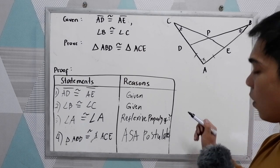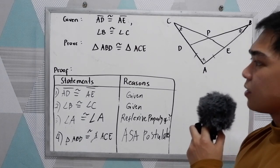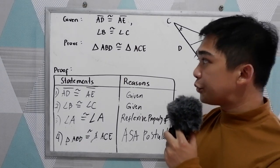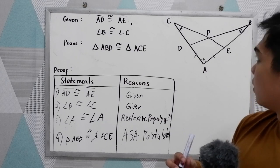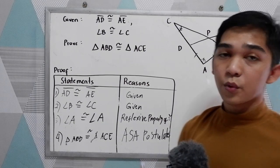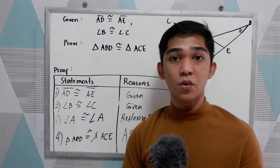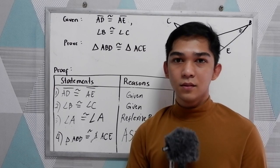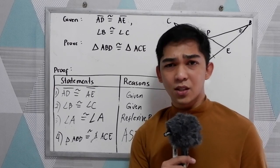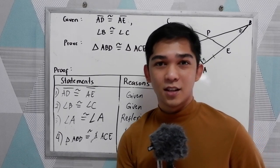That is how to prove congruent triangles using the two-column proof. Thank you for watching Sr. Pablo TV.